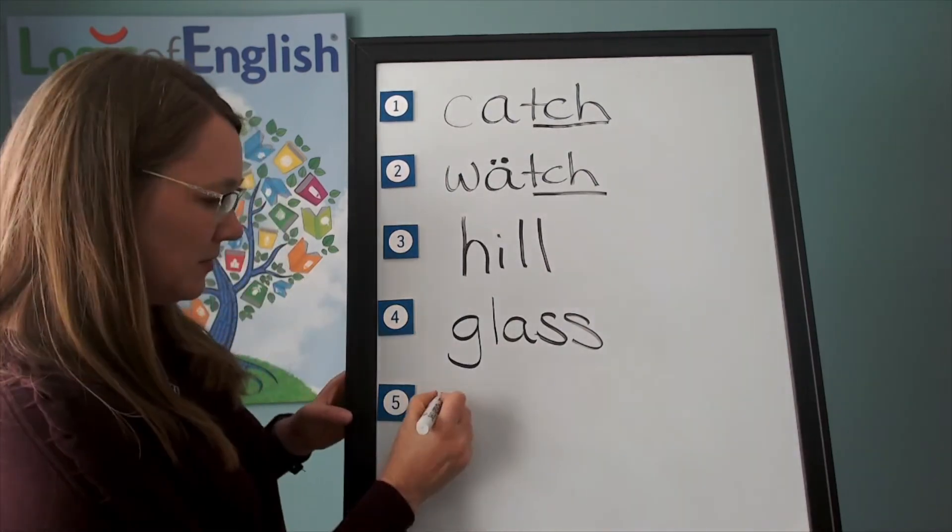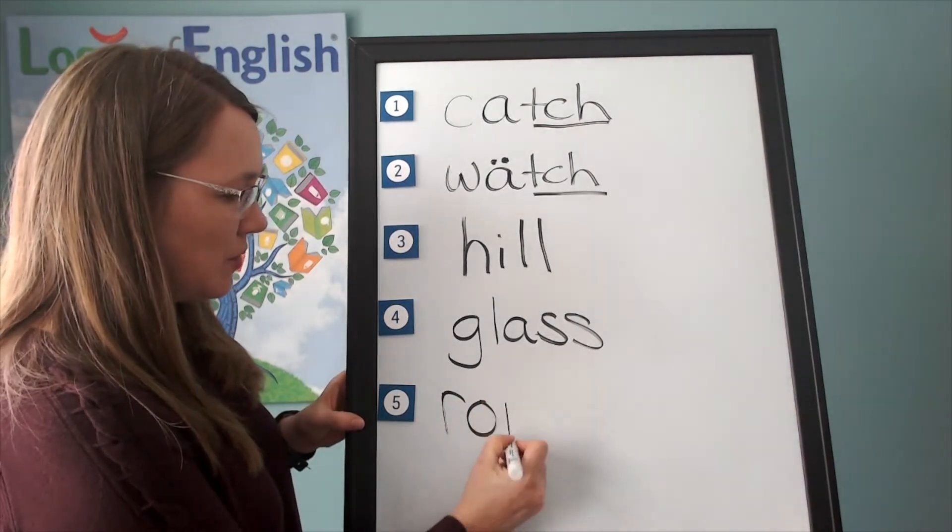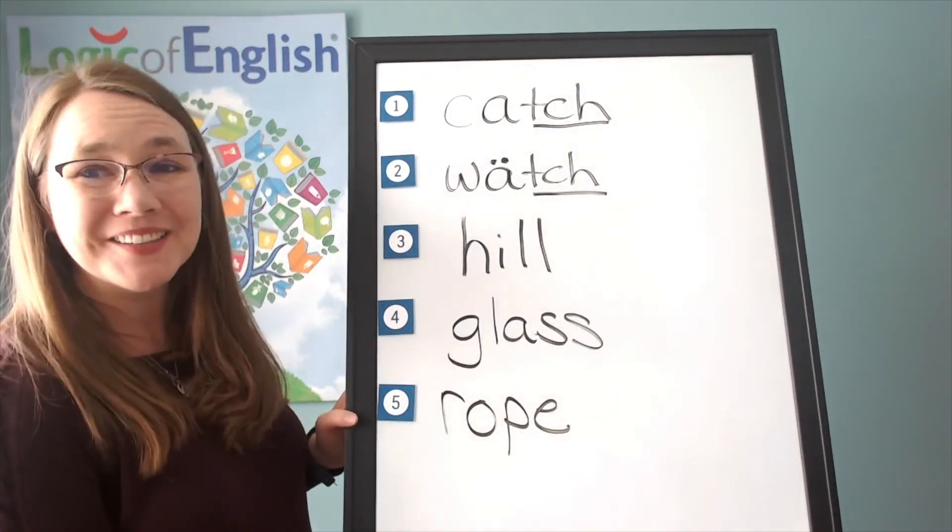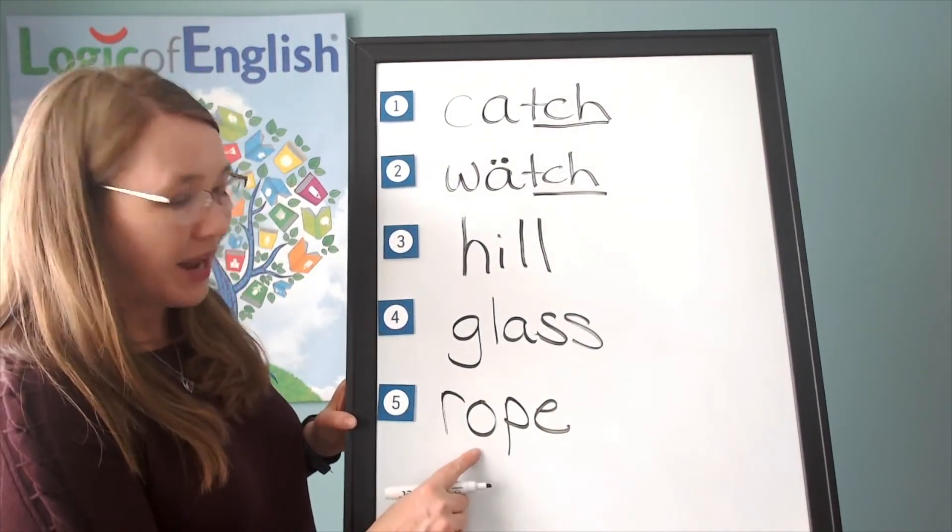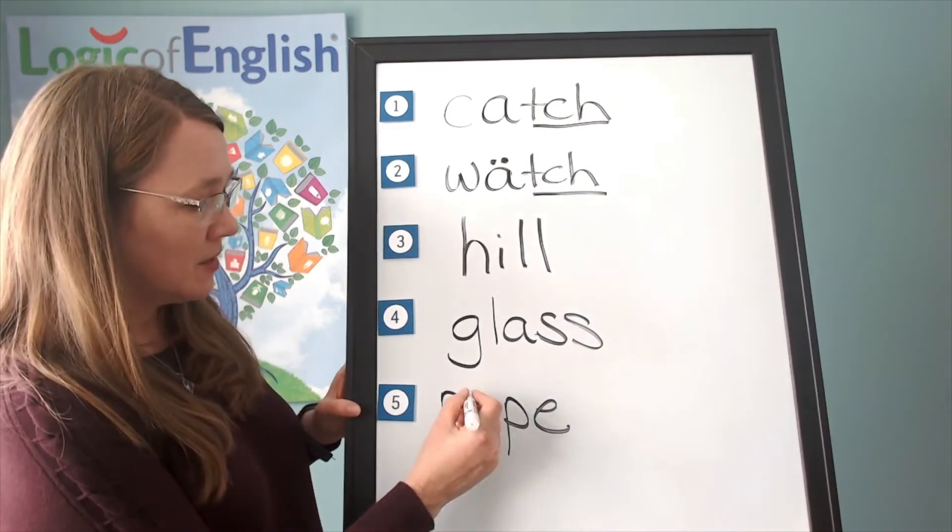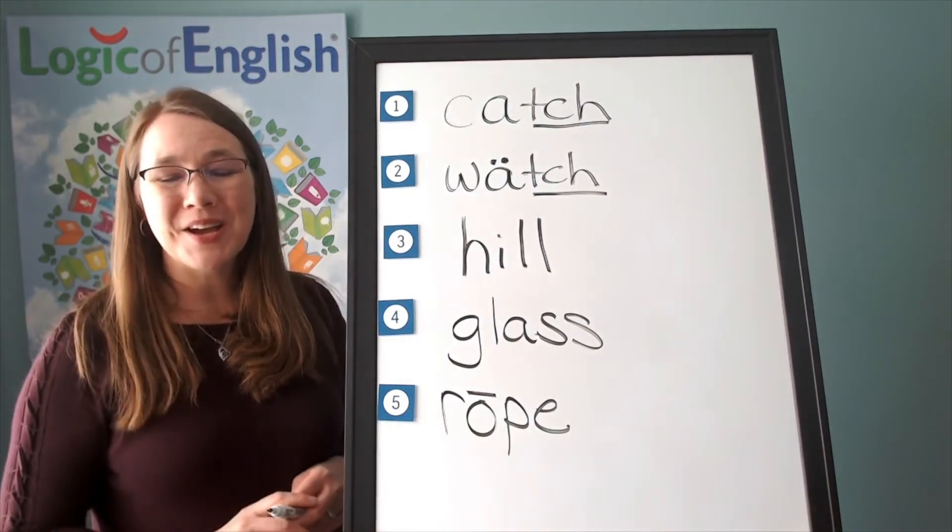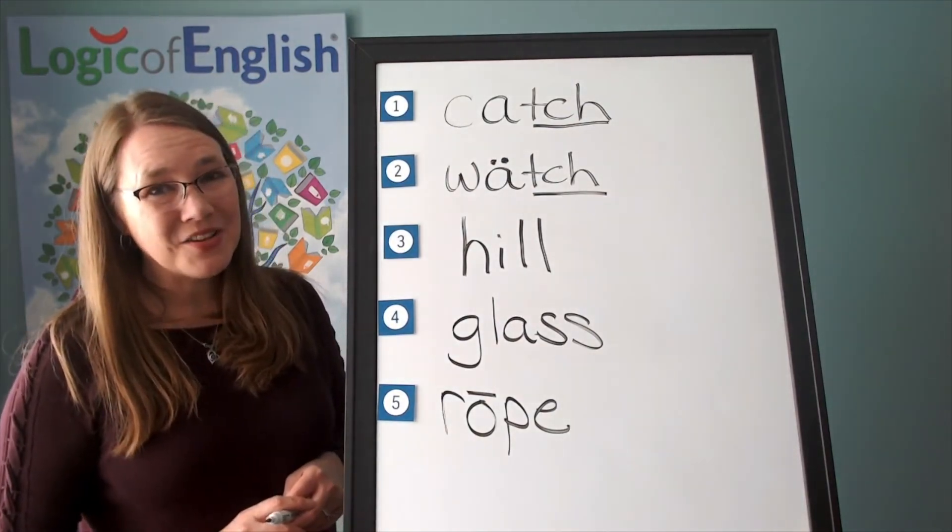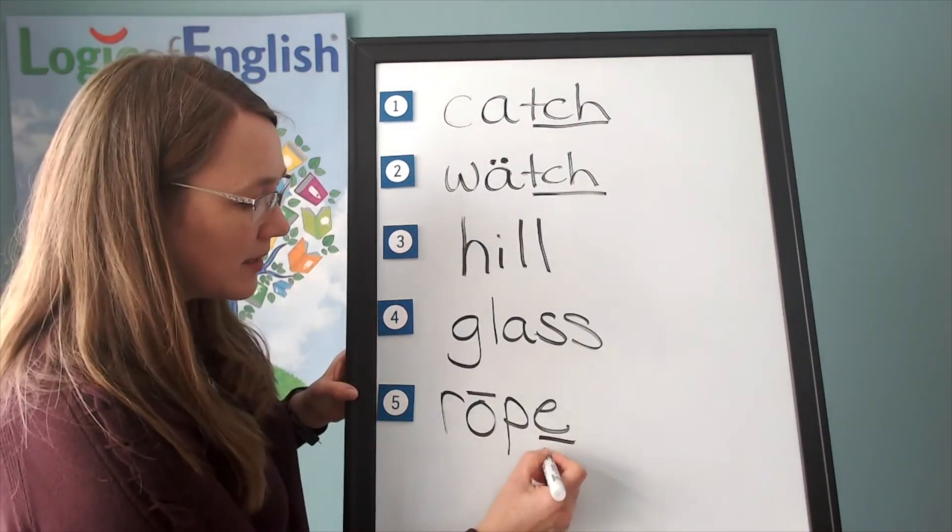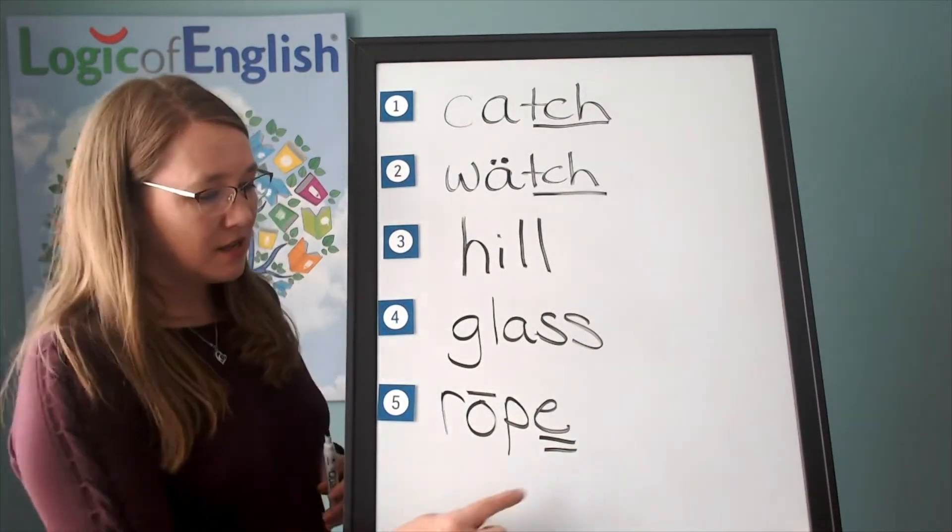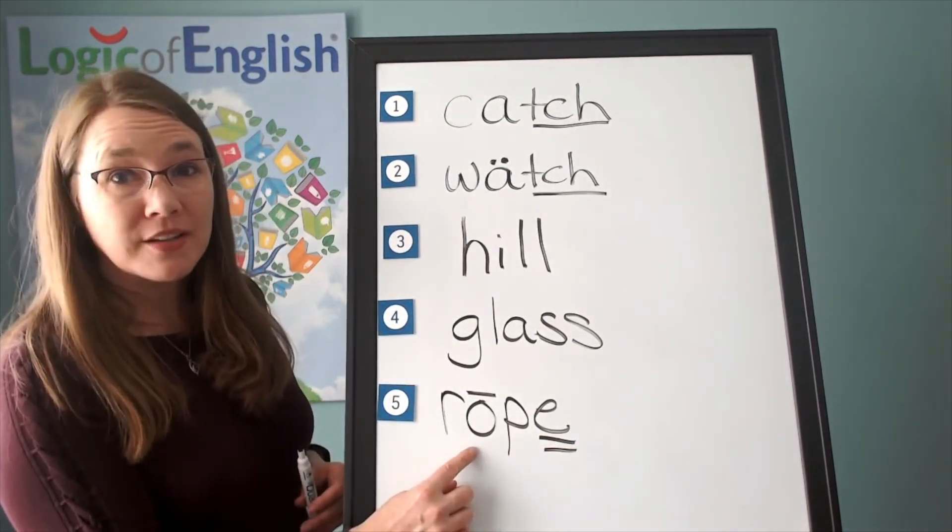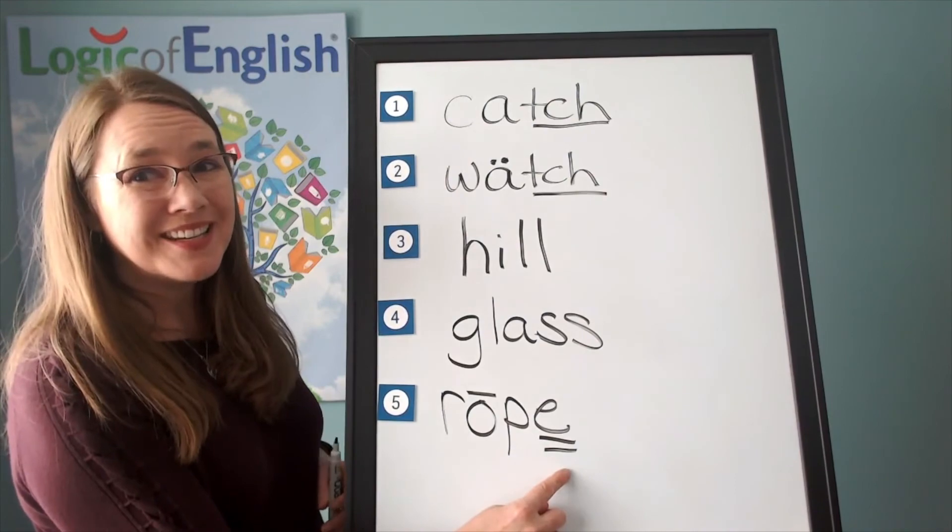Help me to write it now. R, o, p. Silent final e. All right. How do we mark rope? You're right. We'll put a line over the o. Why? O is saying its long sound. And why is it saying its long sound? That's right. Because we have a silent final e. The vowel says its long sound because of the e.